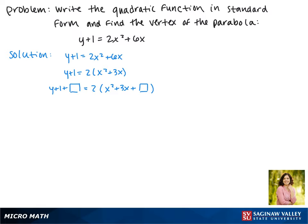Remember to complete the square, we have to do b over 2 squared. So in this case our b term is 3. 3 over 2 squared is 9 fourths.